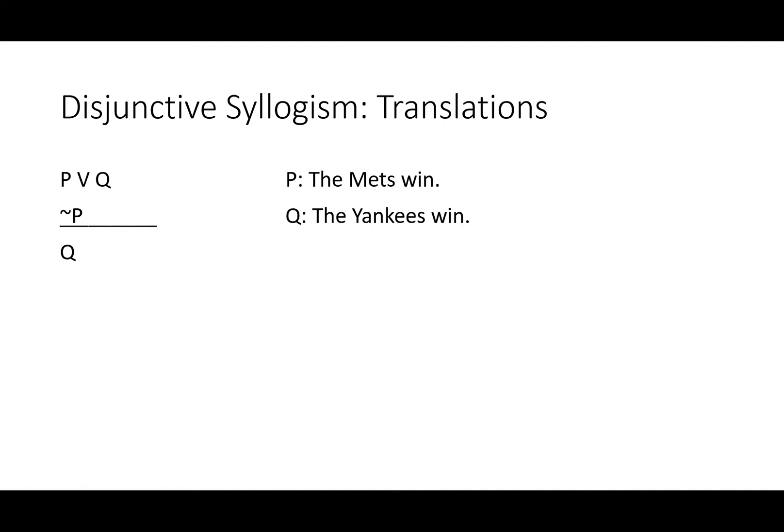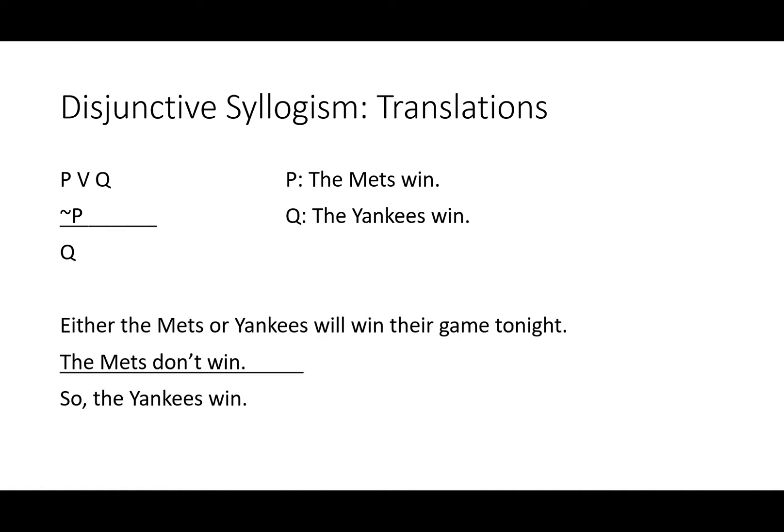Here's a simple translation to help you think about it. Remember, no baseball games end in ties, except the all-star game. The Mets win, P. The Yankees win, Q. Either the Mets or Yankees will win their game tonight. The Mets don't win, so the Yankees win.